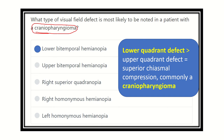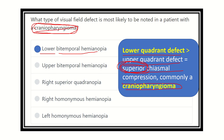To summarize: craniopharyngioma is located in the upper part, so it compresses the optic chiasm in the lower area and causes lower bitemporal hemianopia. This is superior compression. In contrast, pituitary adenoma compresses from the lower part, causing upper bitemporal hemianopia. Therefore, the correct answer for craniopharyngioma is lower bitemporal hemianopia. Thank you.